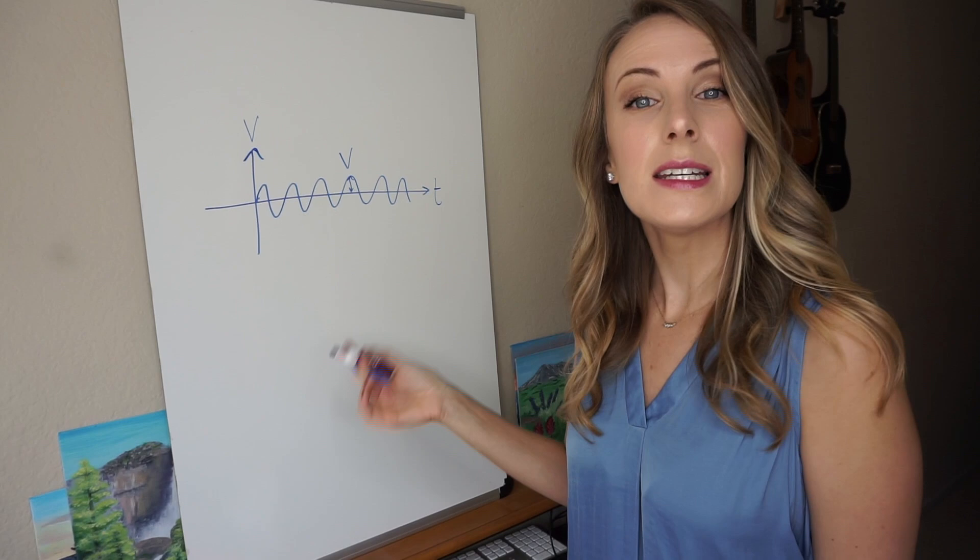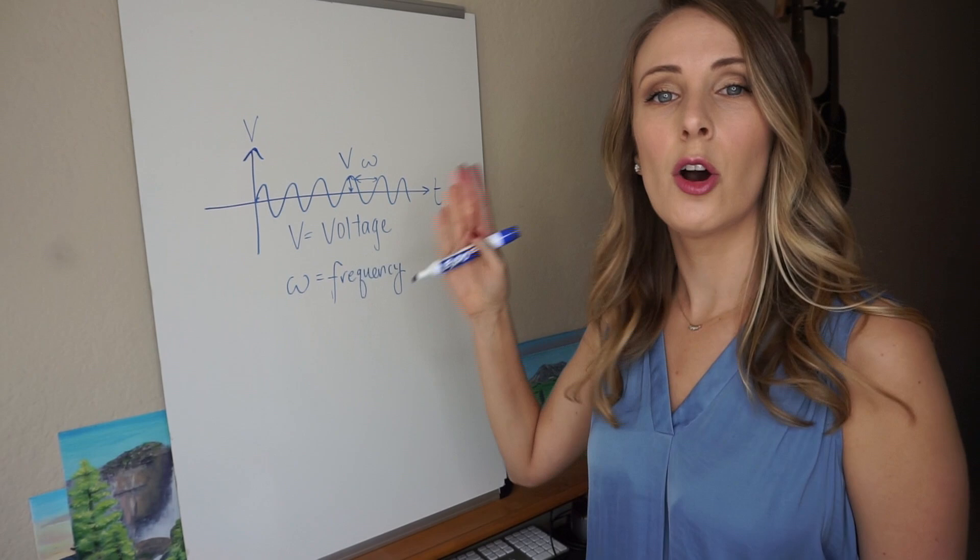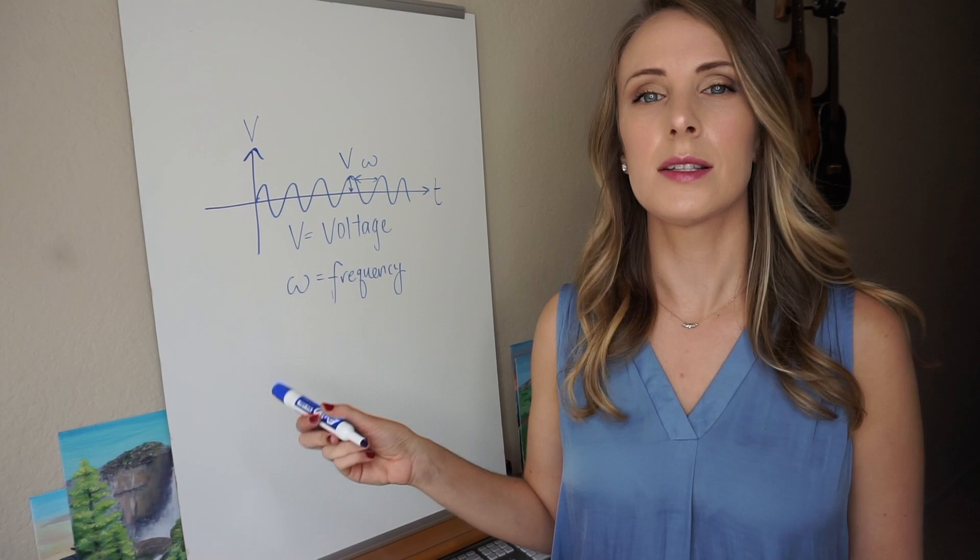The amplitude of these peaks is the voltage, whereas the distance between the peaks is the frequency. So v is the voltage, and omega is the frequency.